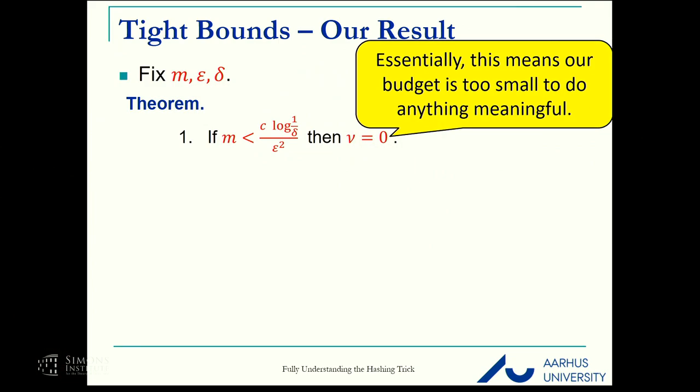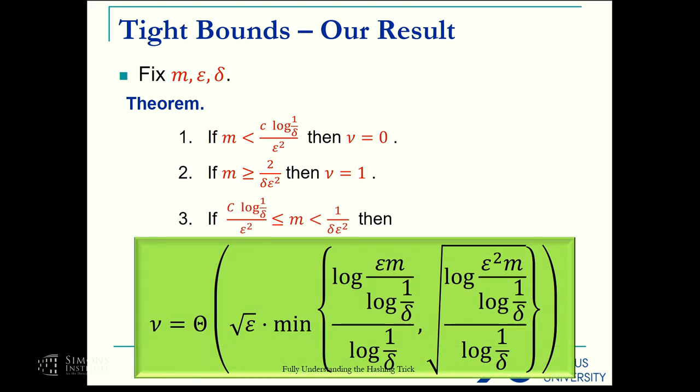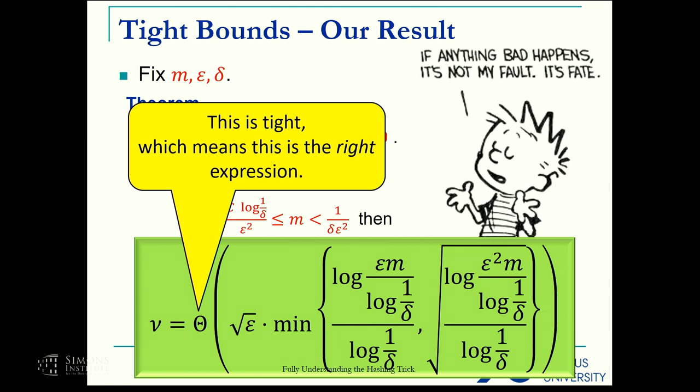What we proved is the following. If m is very small, basically smaller than the Johnson-Lindenstrauss dimension, then we can't do anything. We can't work no matter how small nu is. If m is larger, if m is much larger, then we can do everything. We can sketch every vector. And in between these two, this is the right bound. Chin said epsilon to the two-thirds was weird. This is the right bound and this is tight.